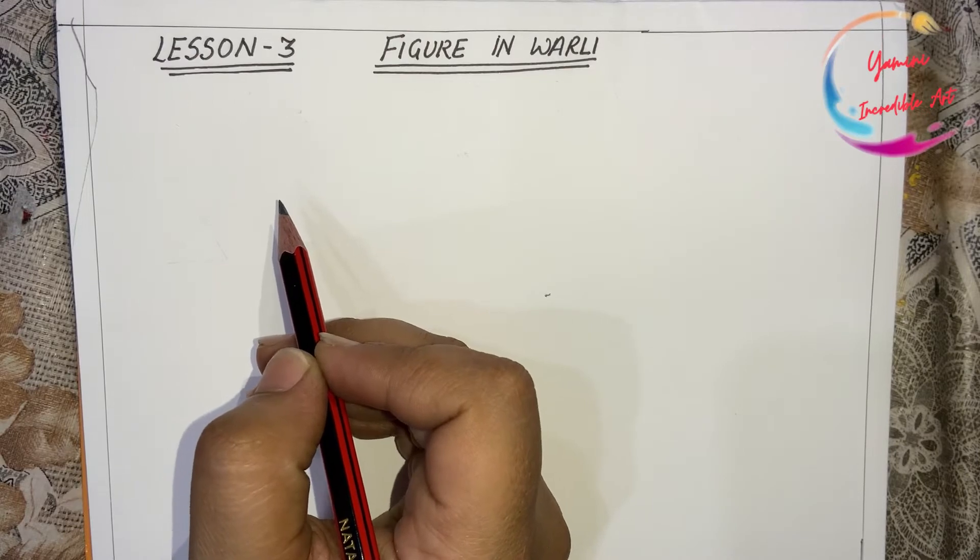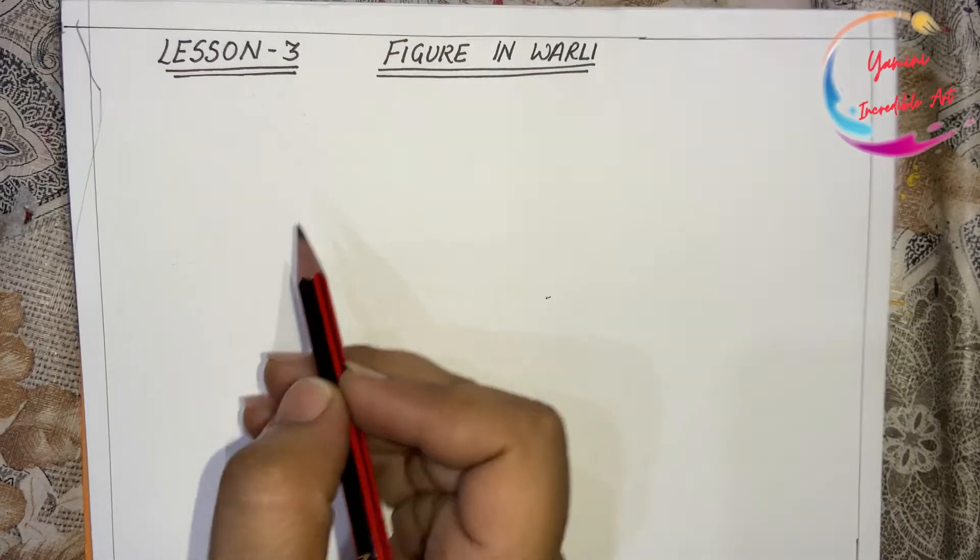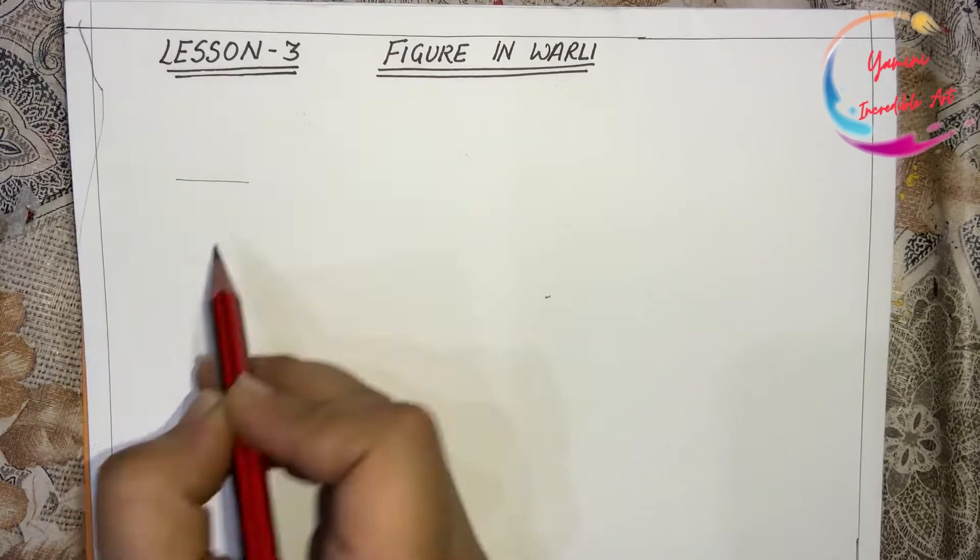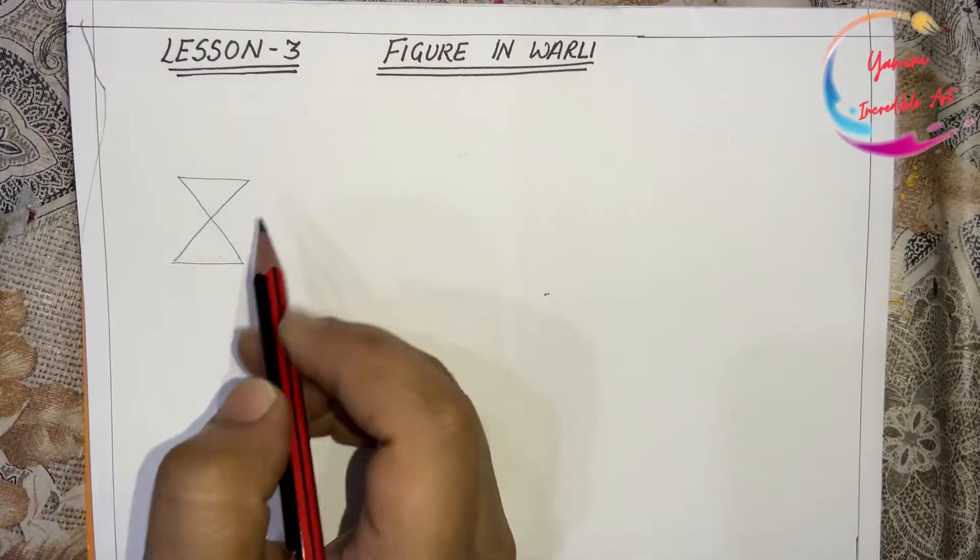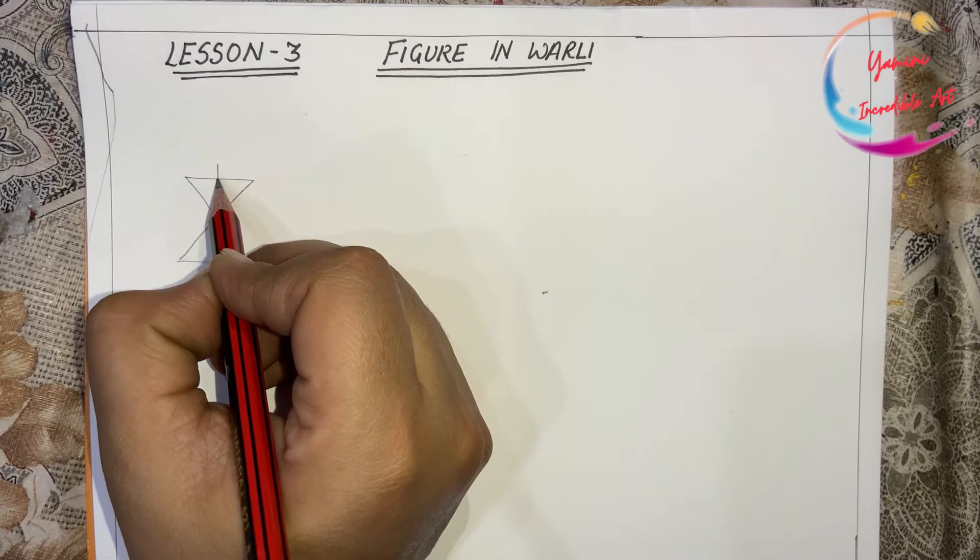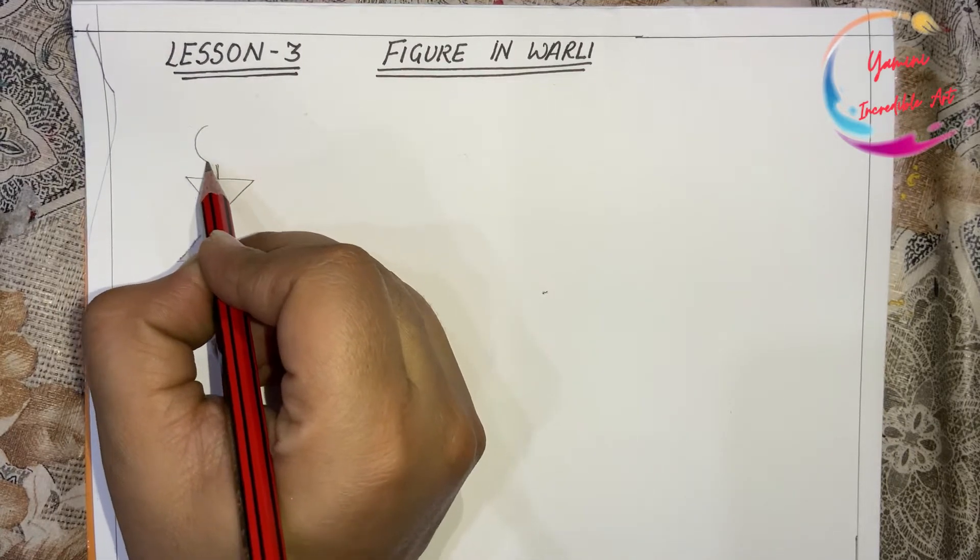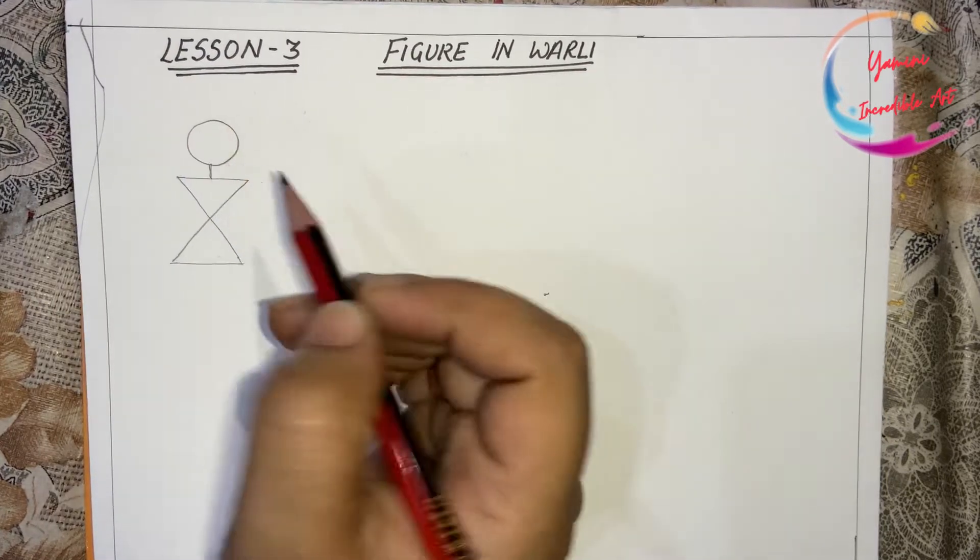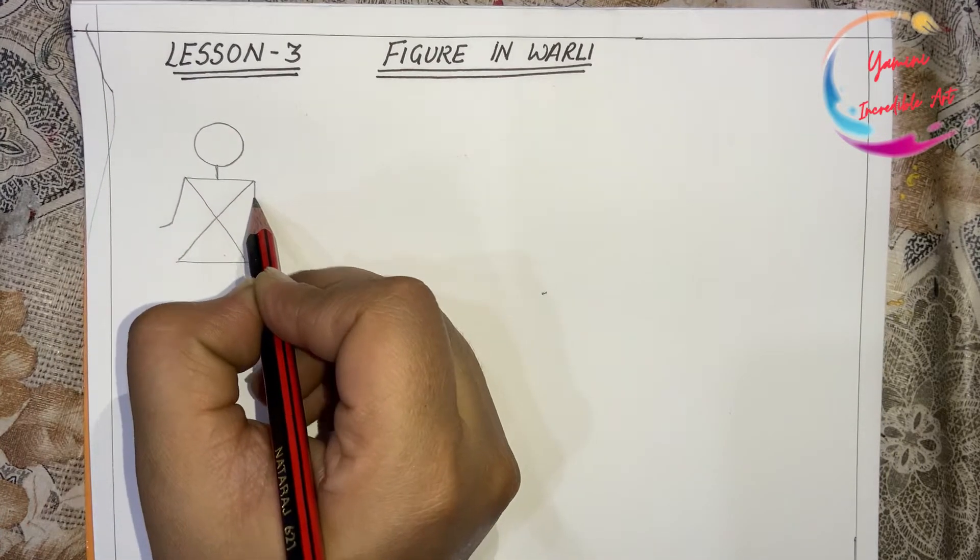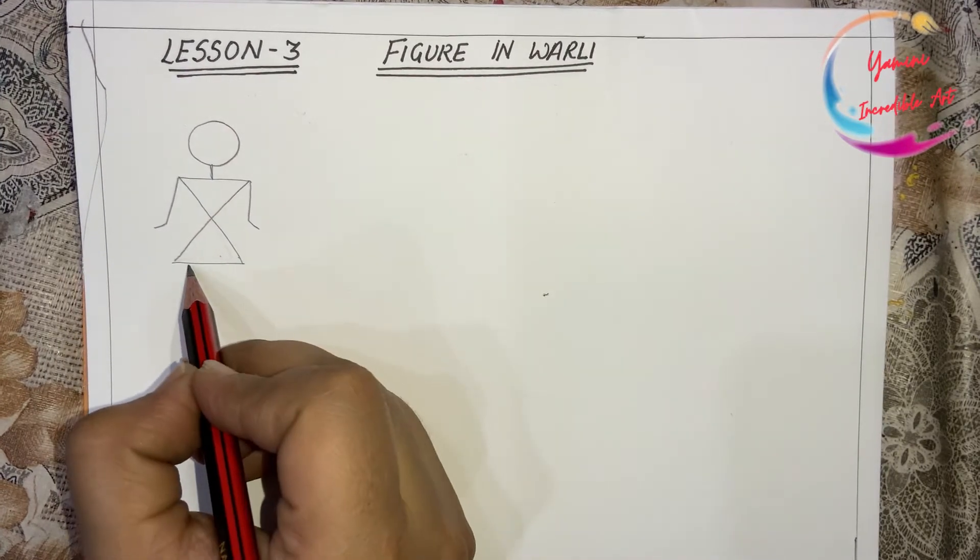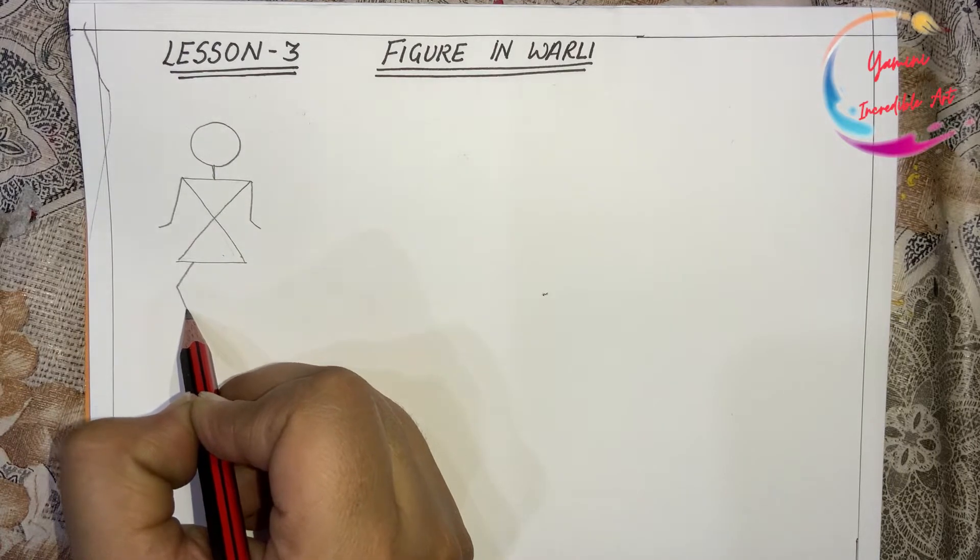First we will draw the man figure. For that we will be making two triangles like this, one triangle is this and second one is this. After that make one standing line for the neck and circle, two hands and legs.